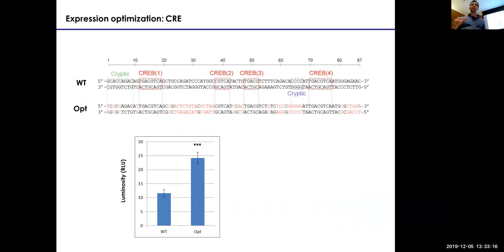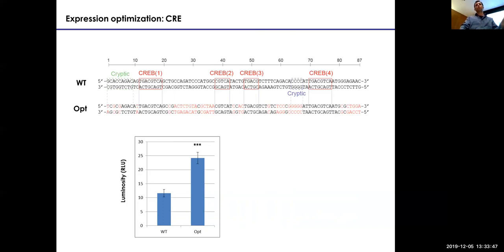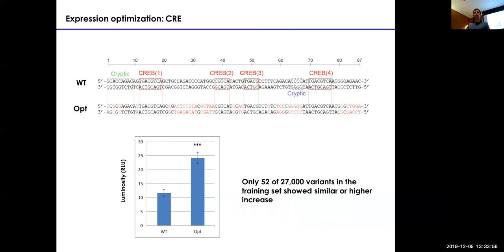You can directly test whether combinatorial effects are additive. Most of the time they are, except for some places where you see synergistic or antagonistic effects. Of the 27,000 possible variants in the training set, only 52 showed similar or higher activity than the synthesized optimized sequence.